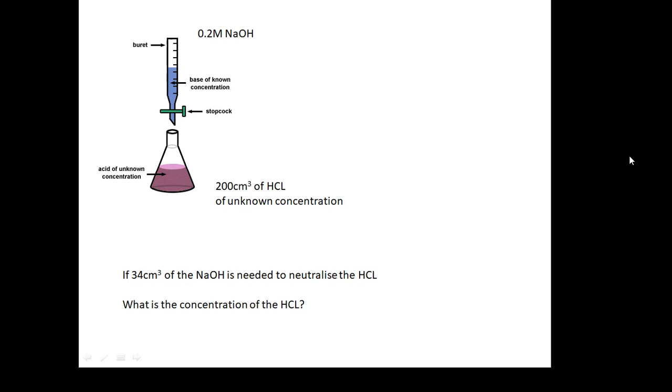This is getting on to the meaty stuff. This is the kind of stuff we really need to be able to do. It doesn't get harder than this, by the way. You've got a titration here with 200 centimetres cubed of hydrochloric acid. You don't know its concentration. That's what we want to work out. But what we find is that 34 centimetres cubed of sodium hydroxide is needed to neutralise it. What is the concentration of the hydrochloric acid? Can you work that out?